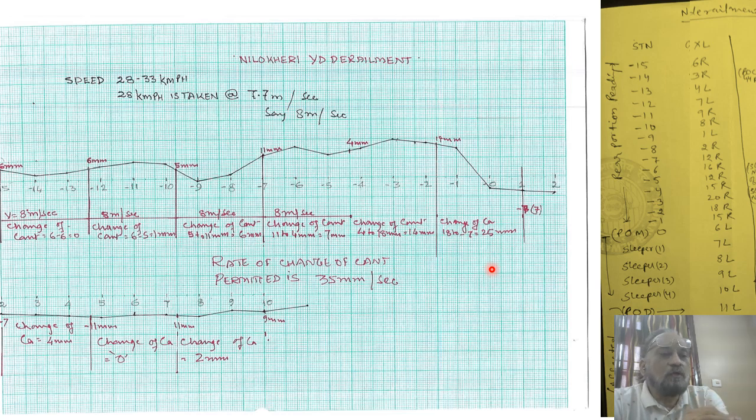This is what I wanted to say. And again once I would like to repeat that this change of cant is within the permissible range of 35 millimeter per second. Because this 35 is already permitted by manual, it is not unsafe. And the higher version, if I say, is more, it is 55 mm under critical condition.